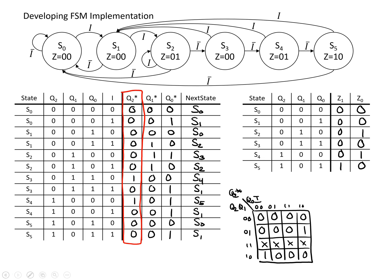It's just a matter of circling appropriately. We've got one term here and one term here, so we can say that Q2* is equal to Q2 · Q̄0 · I, as well as the term Q1 · Q0 · Ī. You can do this for the other two next state values, Q1* and Q0*.